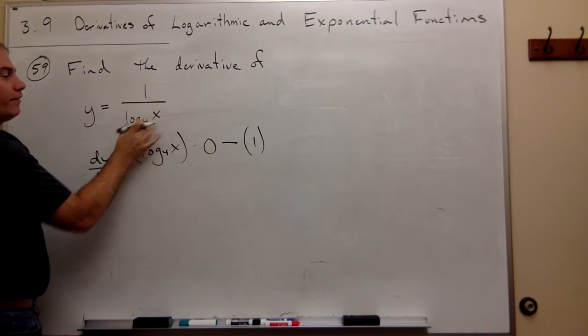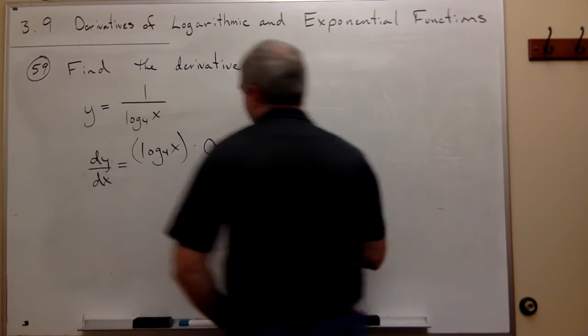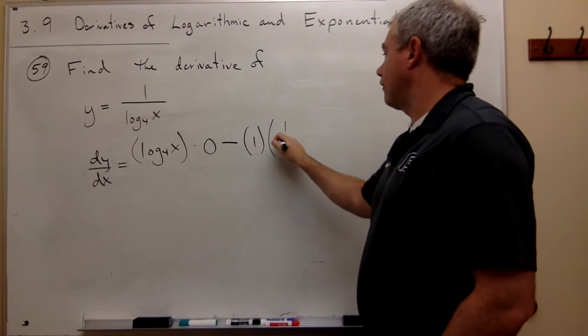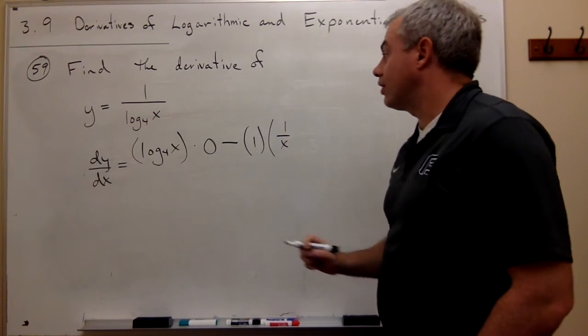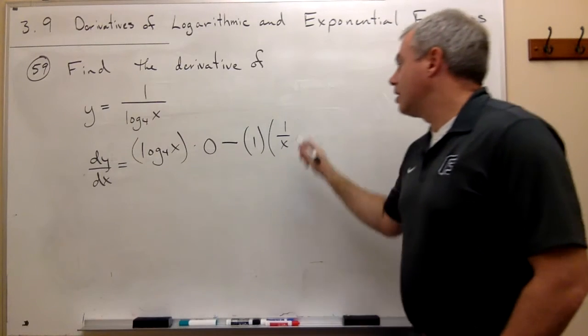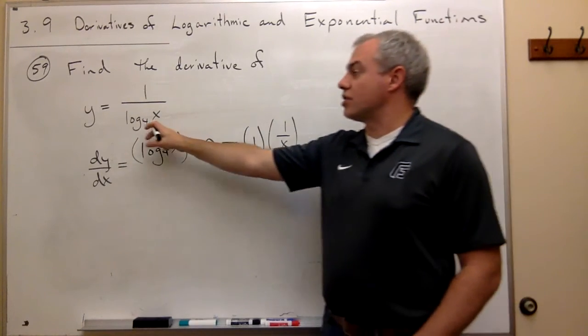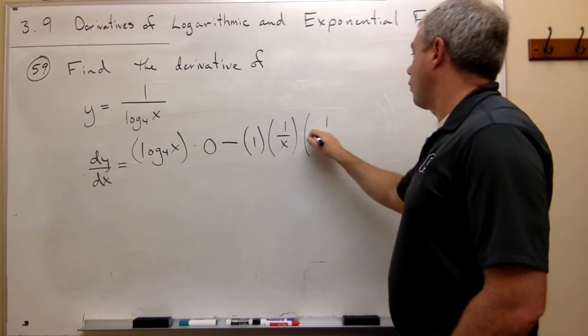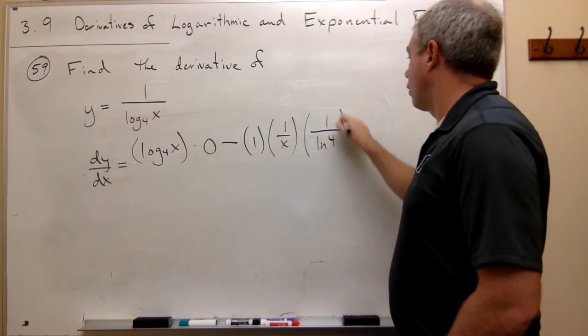times the derivative of the bottom. The derivative of the bottom, log base 4 of x, is just 1 over x, just as if it were ln of x. But to account for the fact that it's not log base e, it's log base 4, I have to multiply it by 1 over ln of 4.